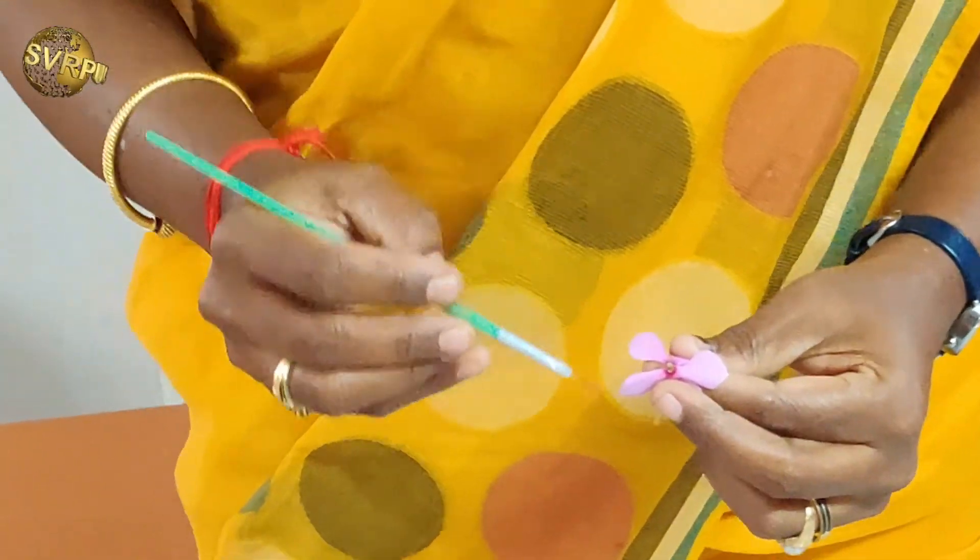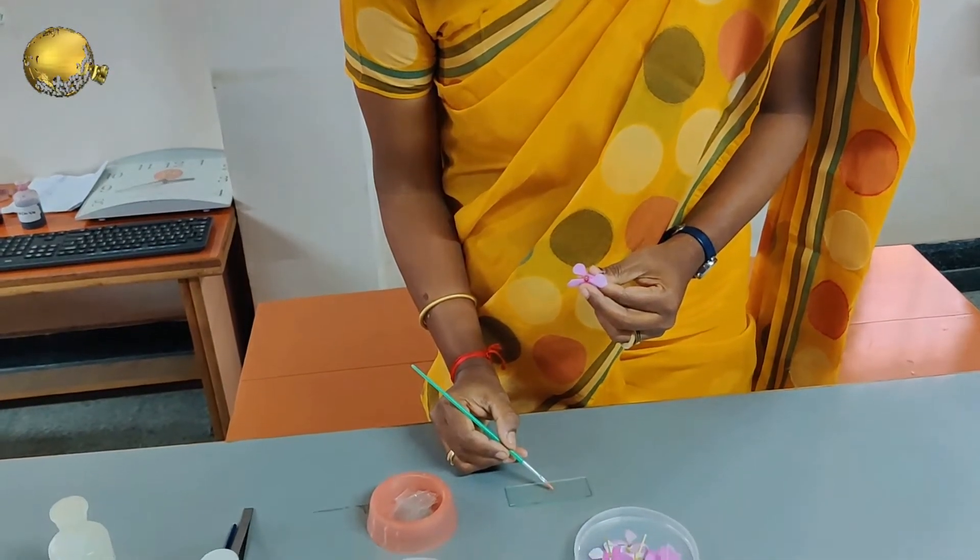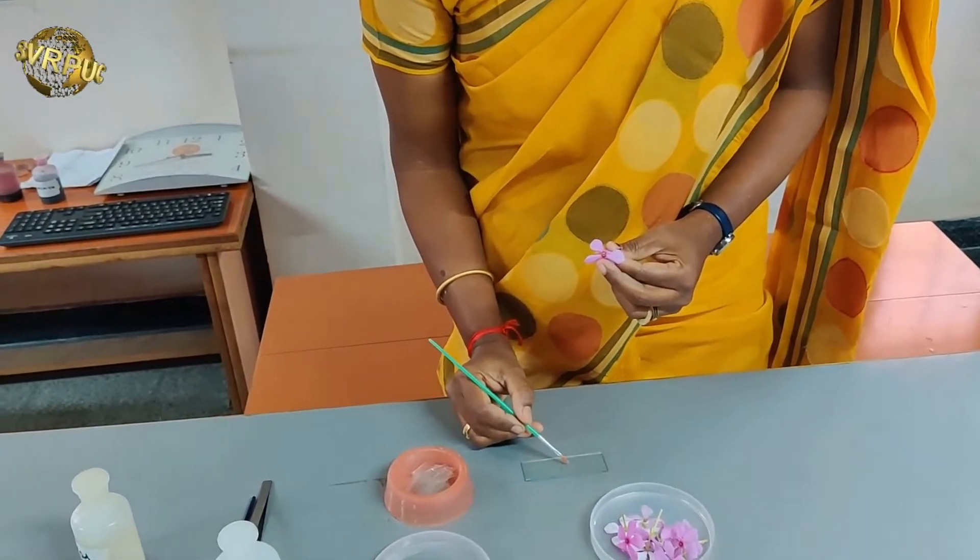Spread the pollen grains. Place it on the sucrose solution.